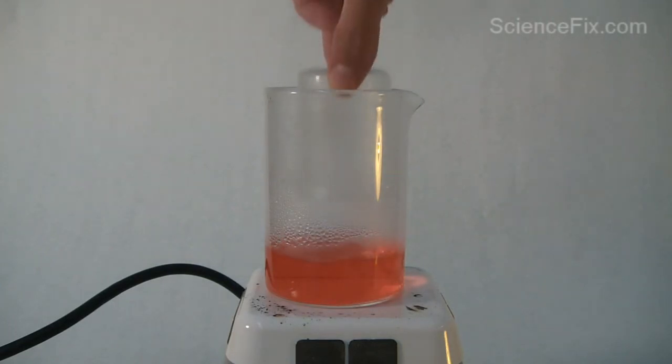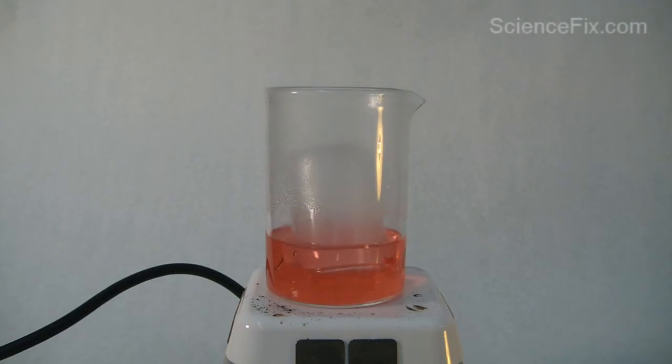On a hot plate is a beaker with some colored water at the bottom. The colored water is boiling and I just placed an inverted beaker into the bigger beaker.